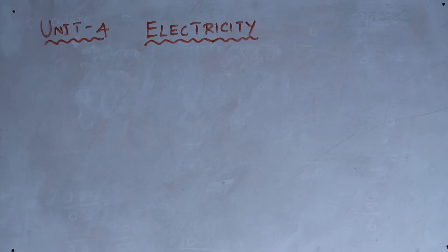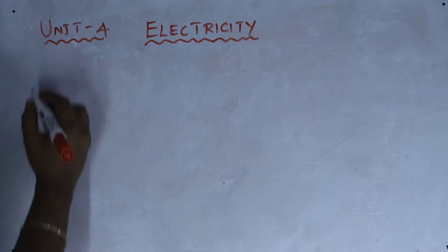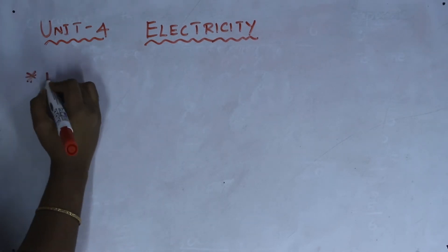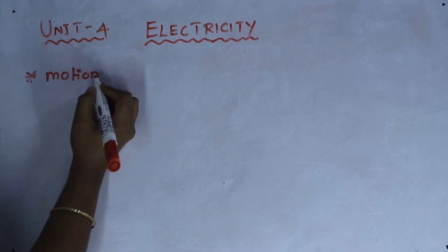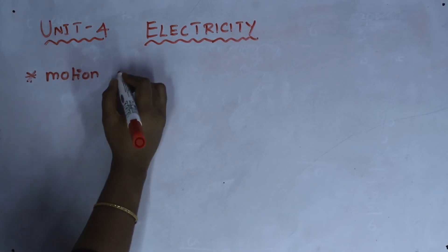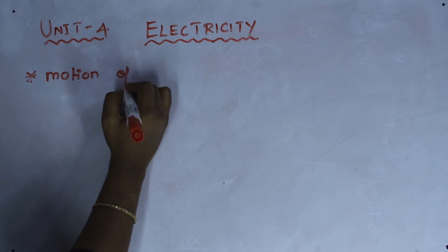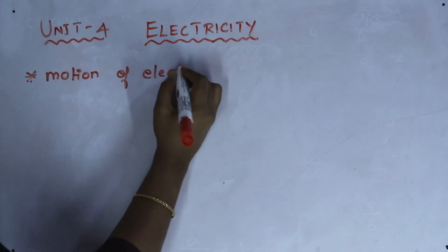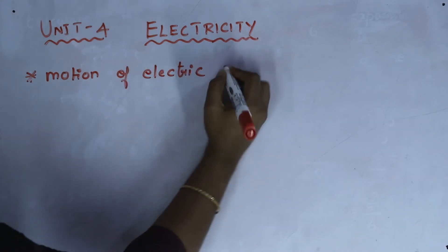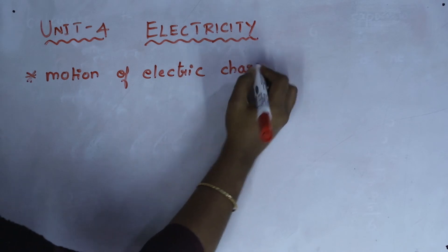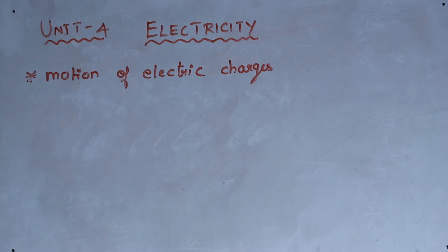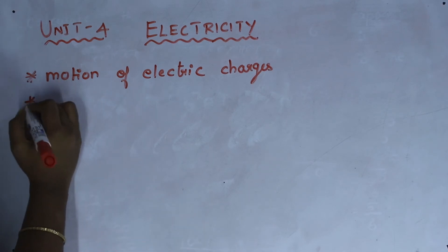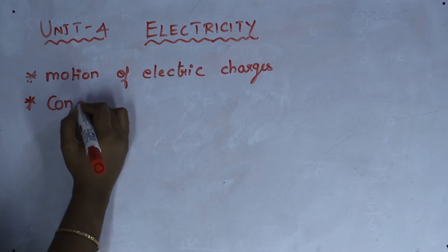Electricity is nothing but the flow of charges — in the sense, the motion of electric charges. The movement of charges constitutes a current. So the motion of electric charges through a conductor forms an electric current.